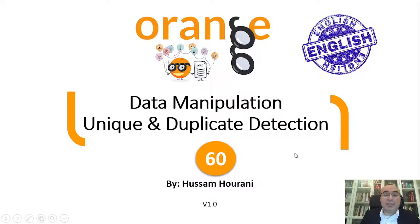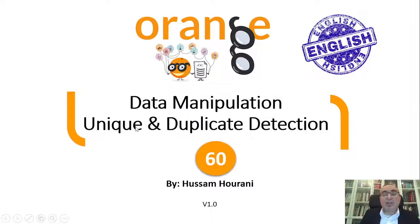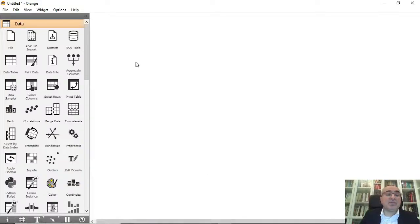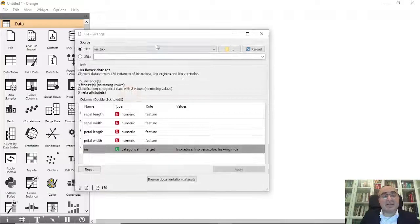Hello, this is Hossam Horani and today we will start a new series in Orange Data Mining. We will start talking about data manipulation — the most critical thing — because this is the data you will use in AI, data mining, and data science. It should be as per our expectation. Today we will talk about unique and duplicate detection: how to make our data unique and remove duplicates. This is a very simple and straightforward subject, so I will be using the File widget with the Iris dataset.